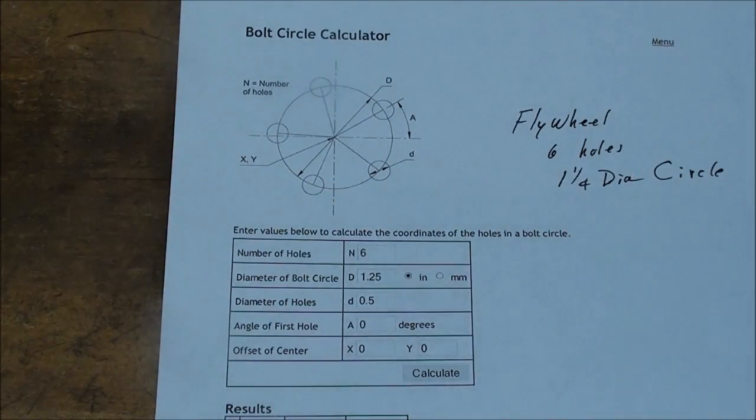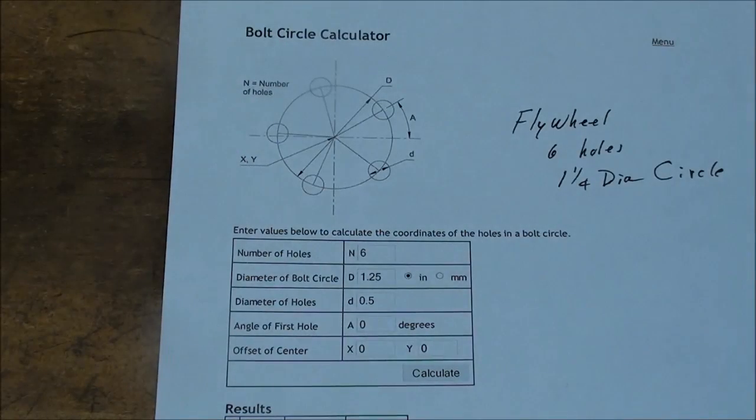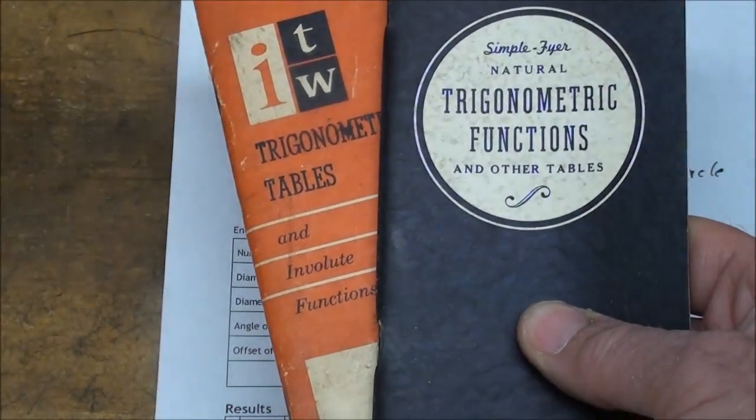There are several different ways to determine the coordinates, or the measurements, for the bolt circle, or hole circle, whatever you want to call it. And if you're an old timer, you probably use your trig tables.